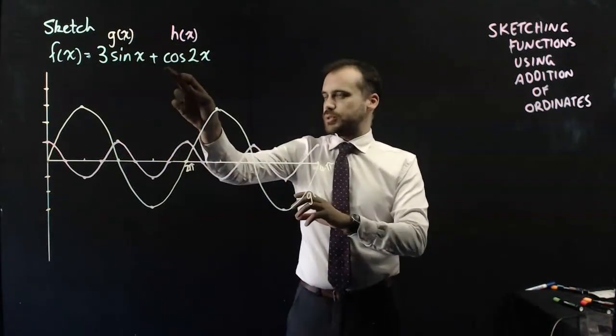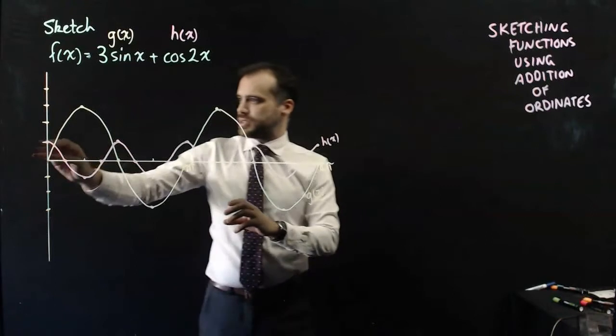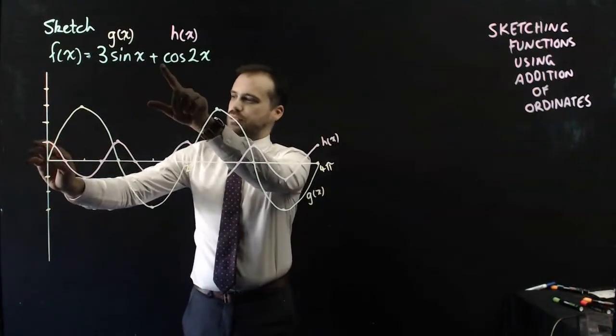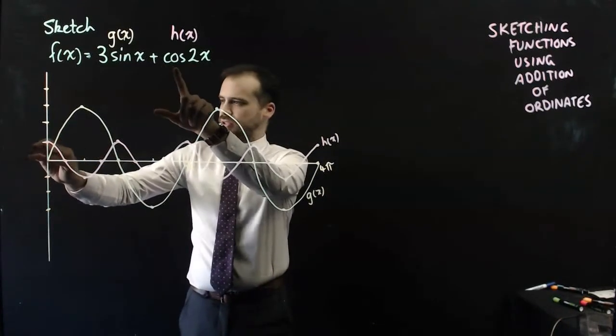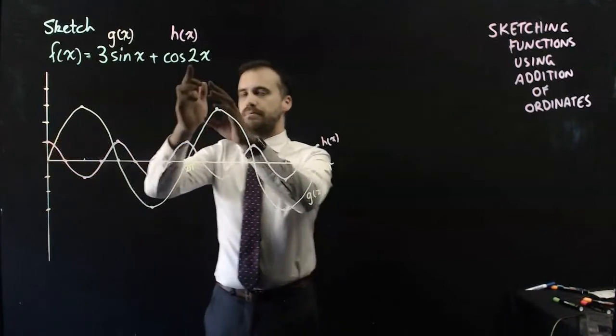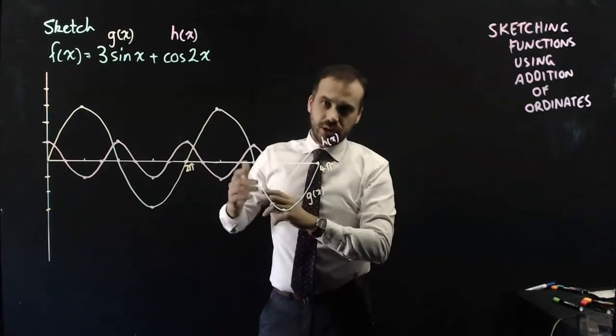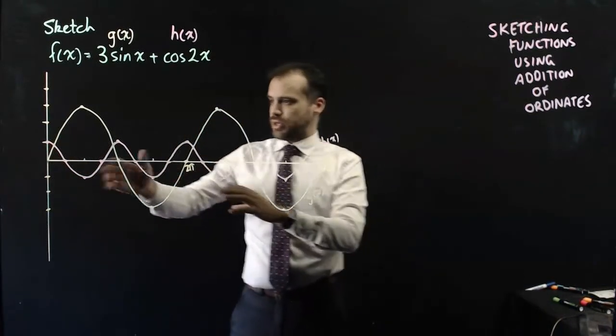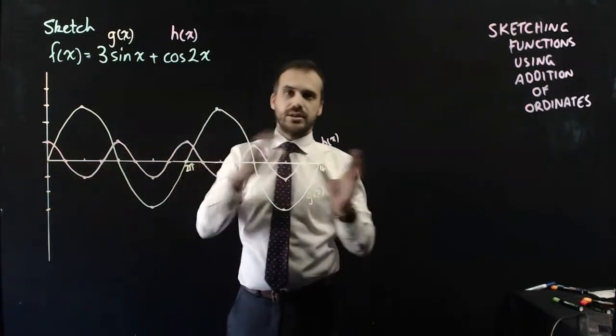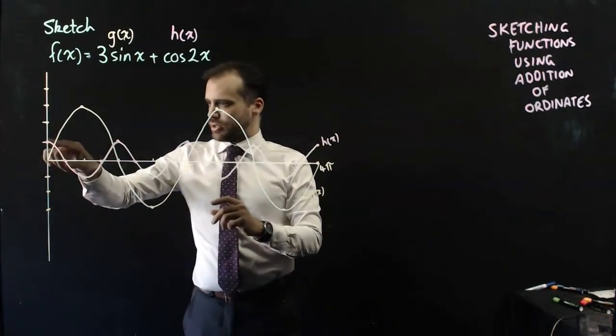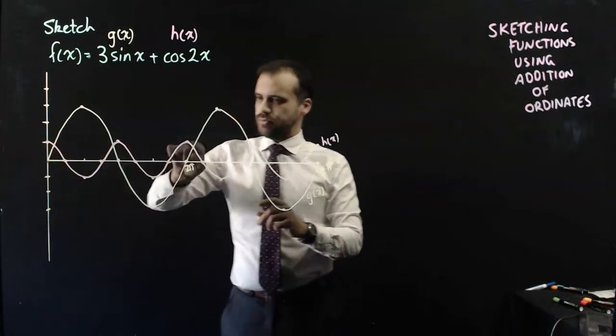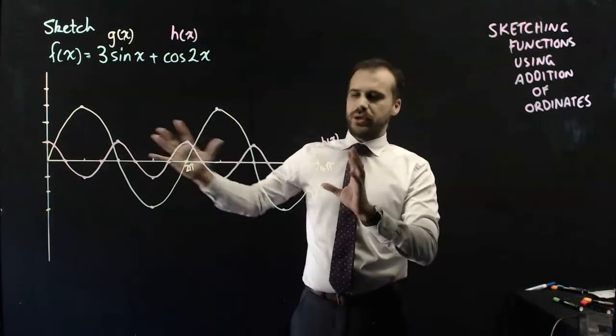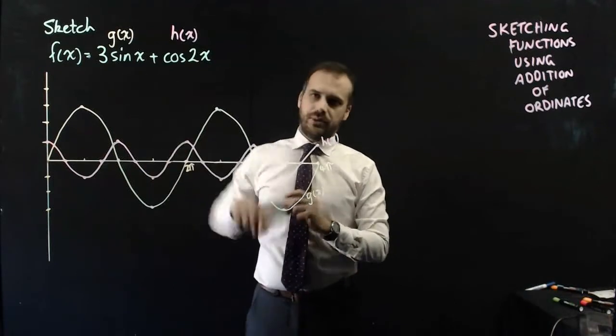Okay, h(x), which is cos(2x), starts at 1, because it's got an amplitude of 1, and it's a cosine function. And it's got a period of 2π over 2, which is π. So the frequency is greater. So we get 4 periods in that section, as opposed to 2 in that section.